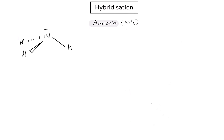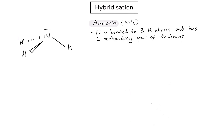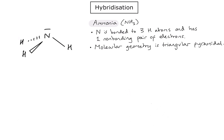First of all, I can see that the nitrogen is bonded to three other atoms and has one non-bonding pair of electrons. If I analyse this substance, we find that there is a molecular geometry of triangular pyramidal around my nitrogen. And therefore, given that I have one non-bonding pair of electrons, the electron geometry must be tetrahedral.